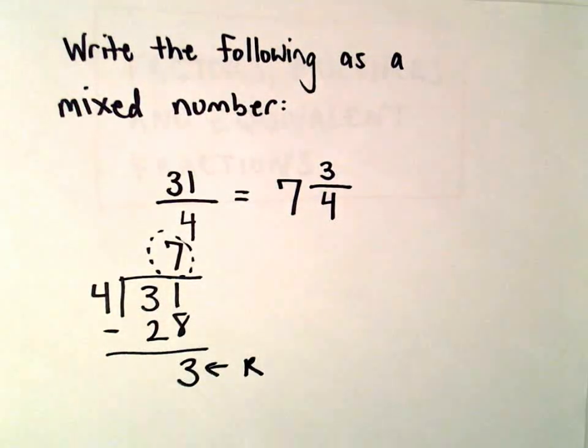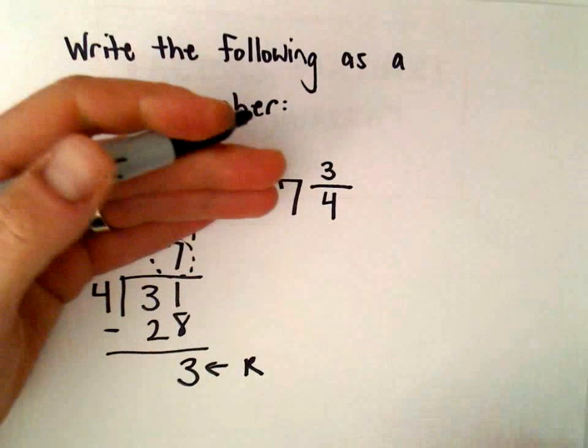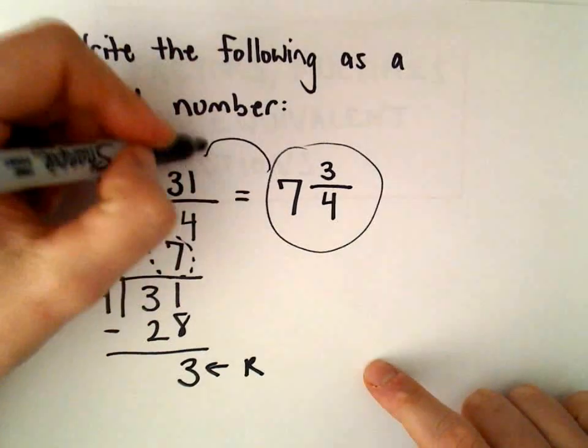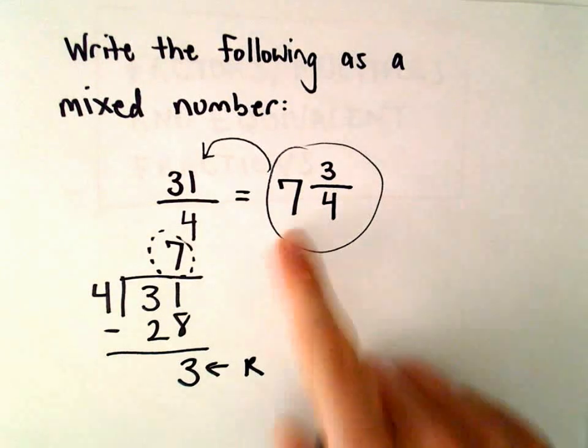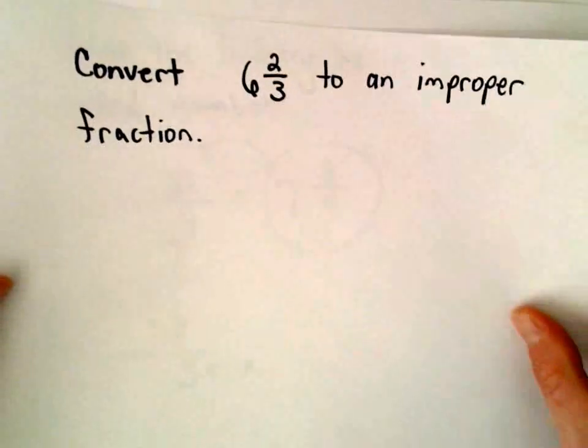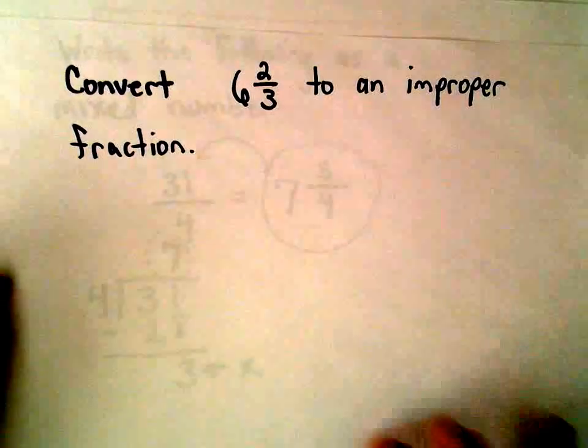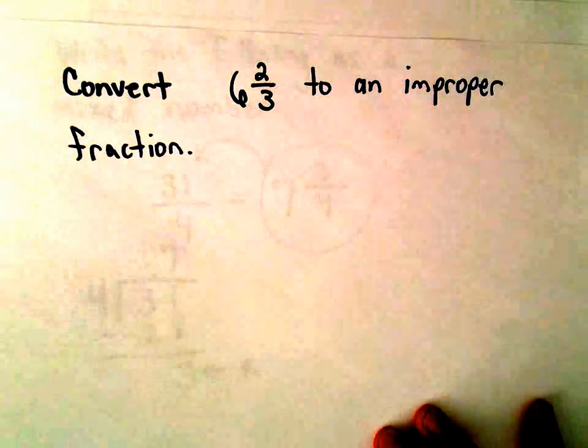I'm gonna go back sort of the opposite direction. Suppose we started with the right side and we wanted to write it just as a fraction, a single fraction with no whole number out front. That's what I'm going to do next. So I'm going to convert 6 and 2 thirds to what we call an improper fraction.